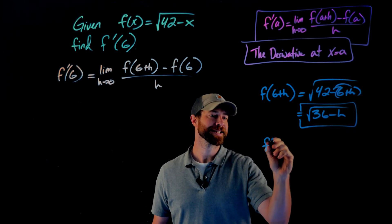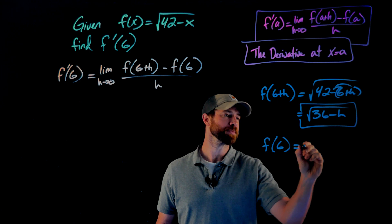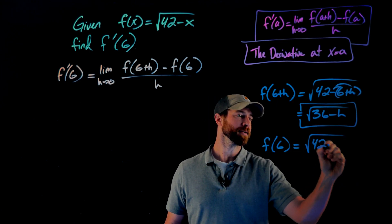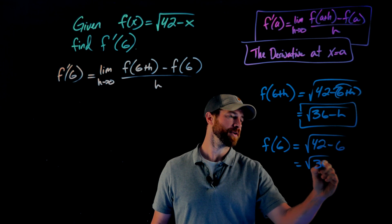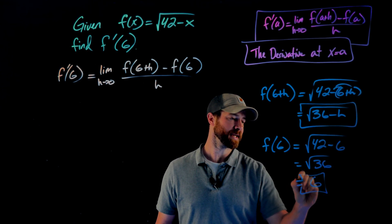And then to calculate f of six, f of six is just plugging in a six now. A little bit easier into this. This will give me the square root of 36, which we know is just six.